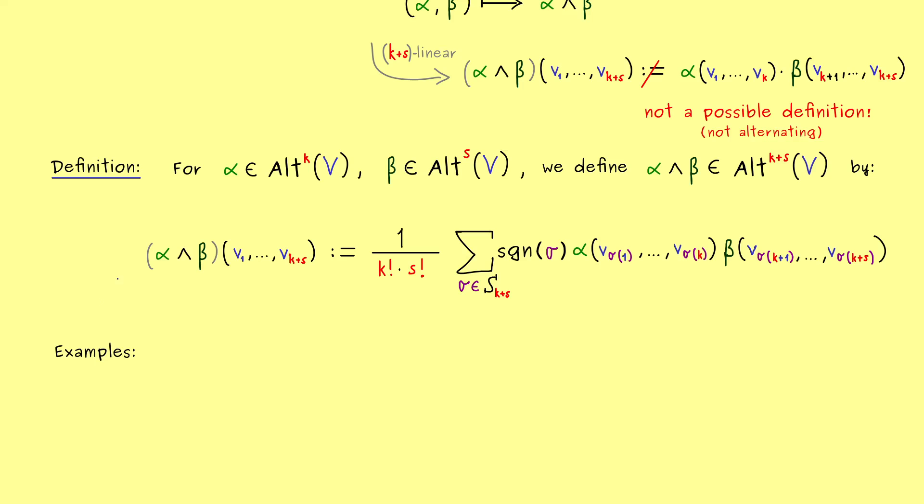And with that, I would say, we are ready to look at some examples. Let's start with a very simple possibility, where alpha and beta are 1-forms on a vector space V.